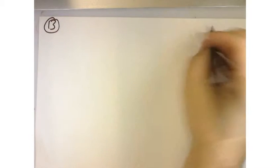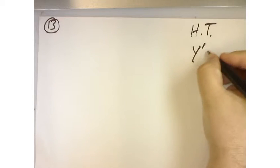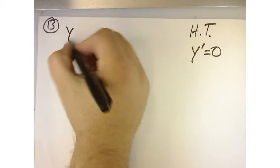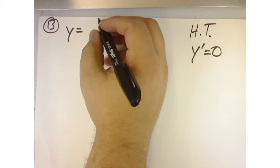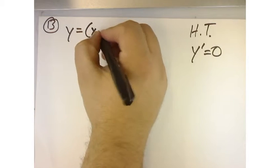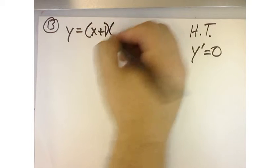Again, we're asked to find the horizontal tangents, which means we're looking for when y prime is equal to zero. Now the only thing that they did differently this time is that they've given us our function, it's already factored.